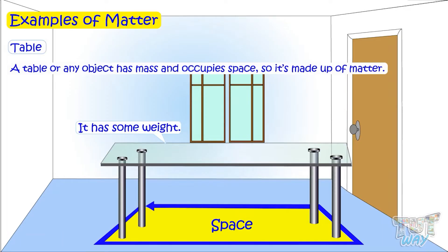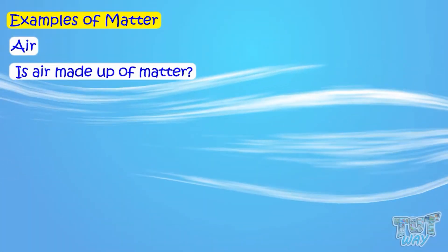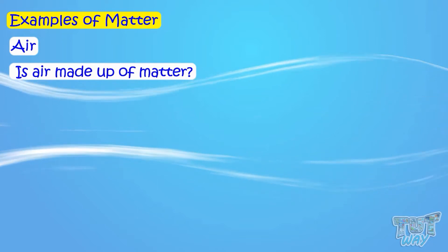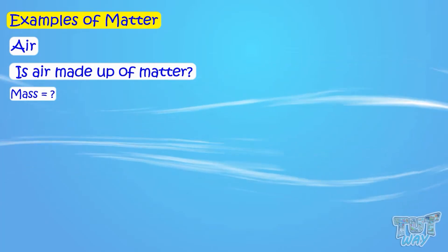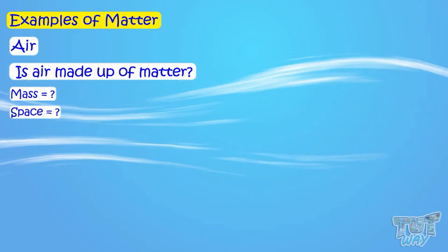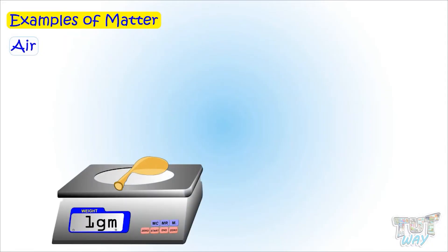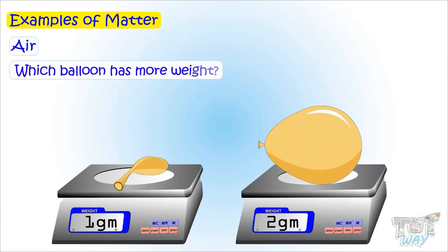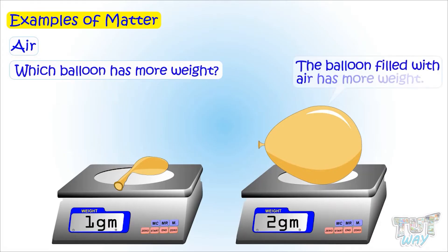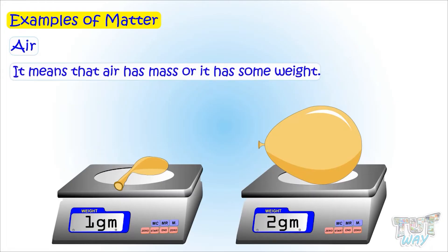Now we will see whether air is made up of matter. In order to prove that air is made up of matter, we should be able to prove that air has mass and occupies space. Take an empty balloon and weigh it. Now fill the same balloon with air and again weigh it. The filled balloon will have more weight. It means that air has mass, or it has some weight.